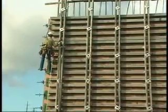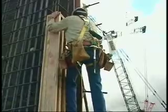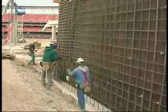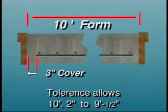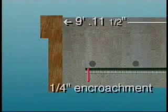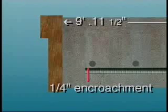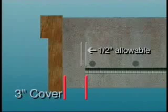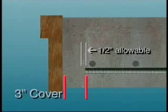A possible tolerance conflict may occur between carpenter and iron worker due to allowable tolerances for formwork and rebar lengths. For example, a 10-foot square footing form may be plus 2 inches and minus 1/2 inch. If the inside footing form dimension is 9 feet 11 and 1/2 inches, the correct bar length would encroach 1/4 inch each end into the specified 3-inch cover. This is acceptable because ACI 117 allows up to 1/2 inch encroachment on the 3-inch cover.